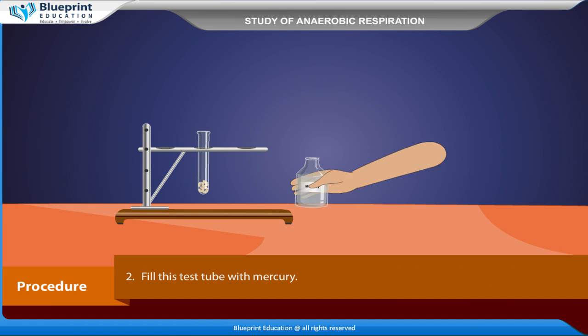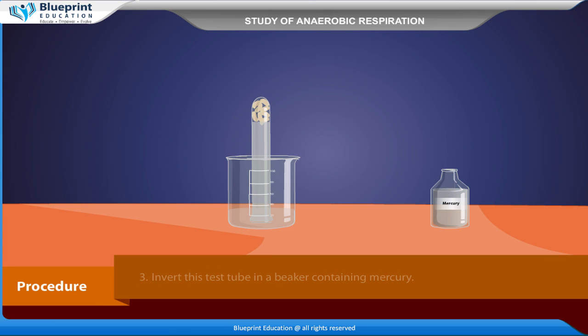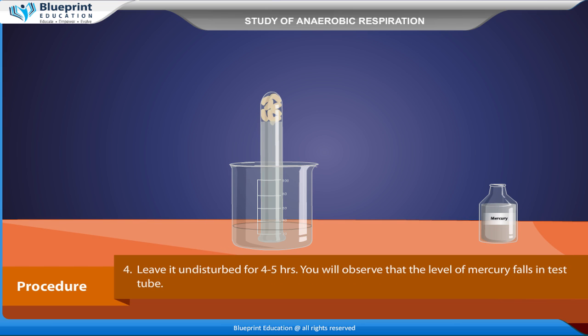Fill this test tube with mercury. Invert this test tube in a beaker containing mercury. Leave it undisturbed for 4-5 hours. You will observe that the level of mercury falls in the test tube.